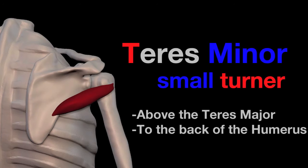The few things you need to know about it: it's above the teres major, and it goes to the back of the humerus. So here's the origin, and here's the insertion. Just to reiterate, when it's activated, the distance between these two becomes shortened, so it rotates the arm backwards.